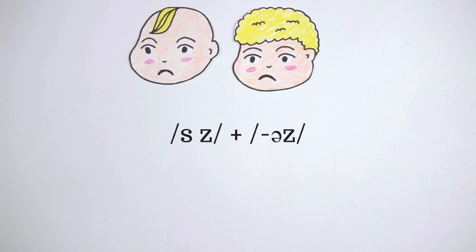The same pattern was found for past tense. The children could use correctly D and T allomorphs, but could not generalize the correct use of ED.